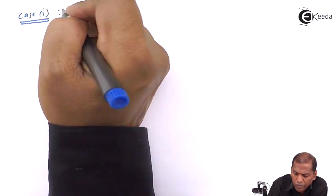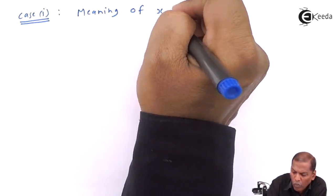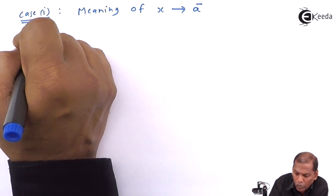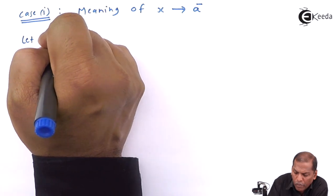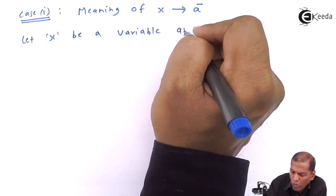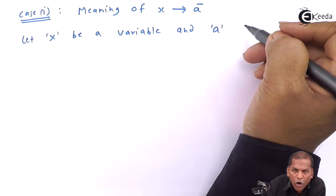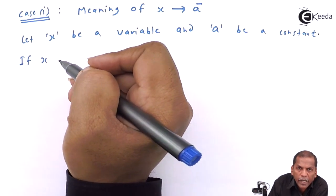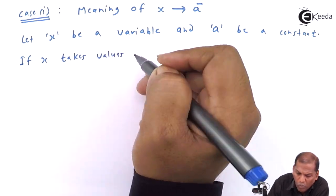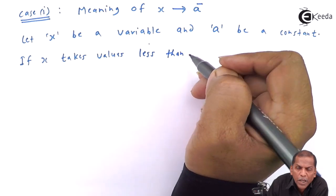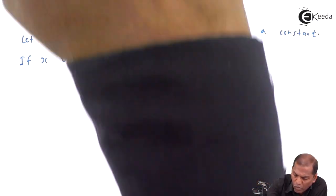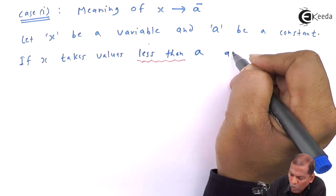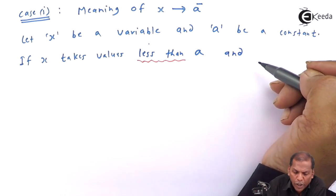Now case number one: the meaning of x tends to a minus. Let x be a variable and a be a constant. If x takes values less than a and approaches to a,